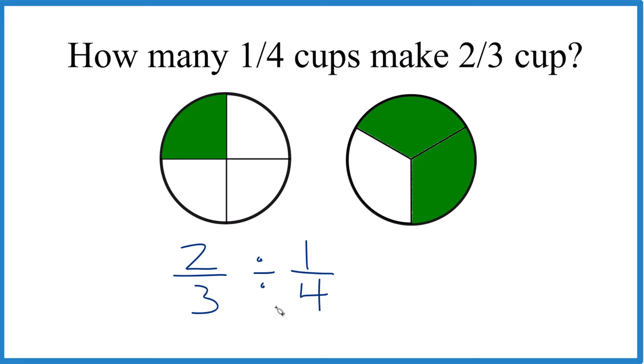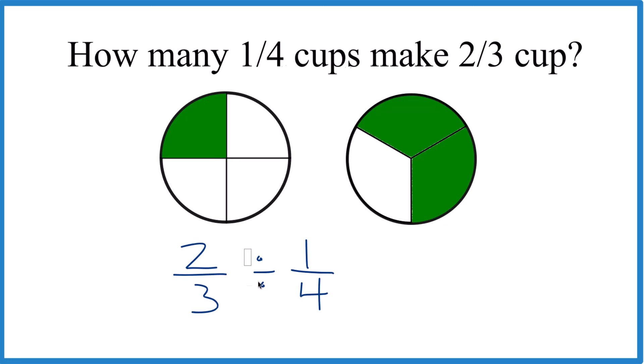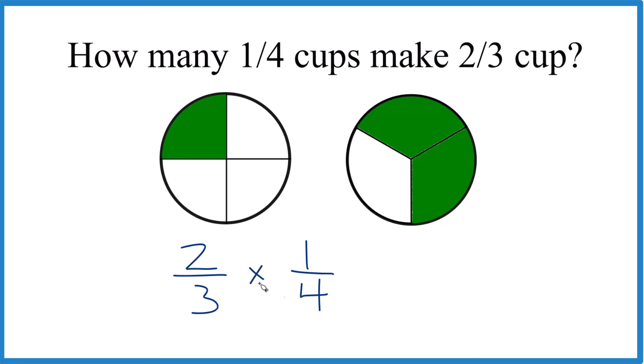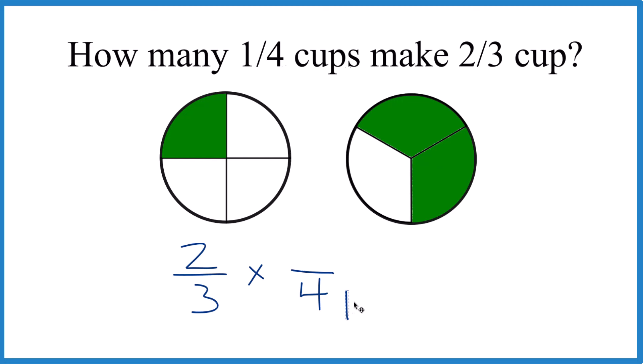So when we do this, it's easier mathematically to take the division, get rid of that, and call it multiplication. But we're going to multiply by the reciprocal here. We're going to move the four to the top, the one to the bottom. So the one comes down here, four, that goes up here to the numerator. So that's the reciprocal.